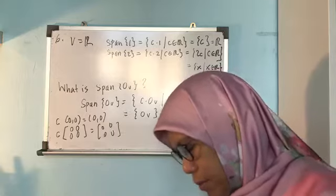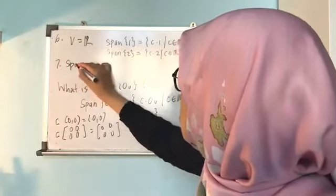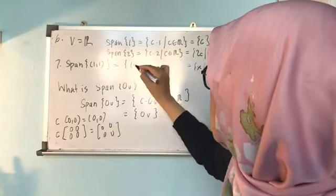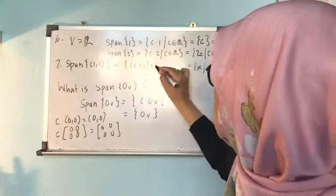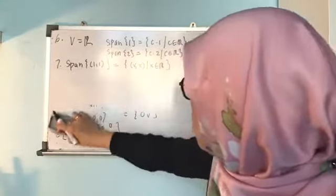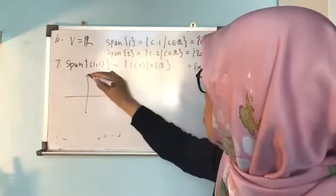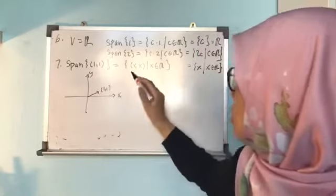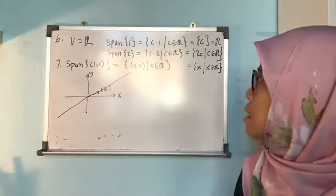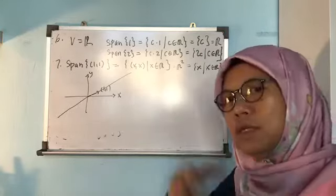Number 7: span of {(1,1)} in R2 — the vector (1,1) is in the plane. Multiplying by C gives the whole line through (1,1). This is again not R2, just a line. So it does not span all of R2.